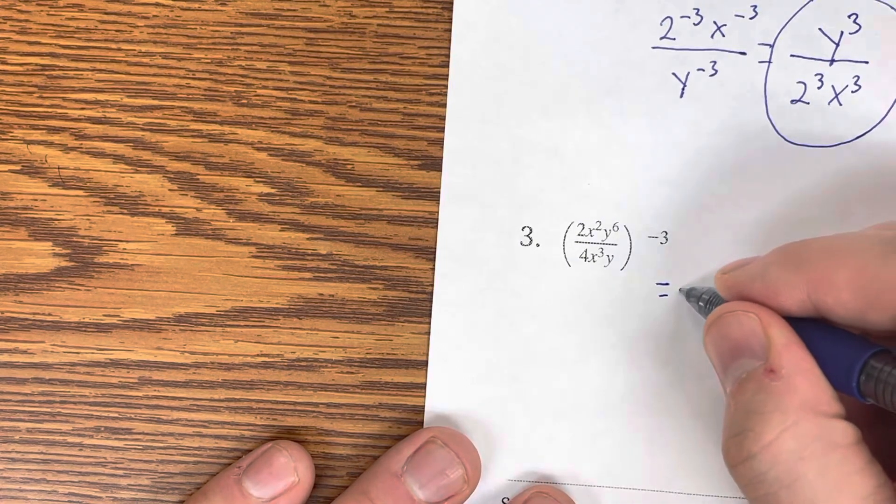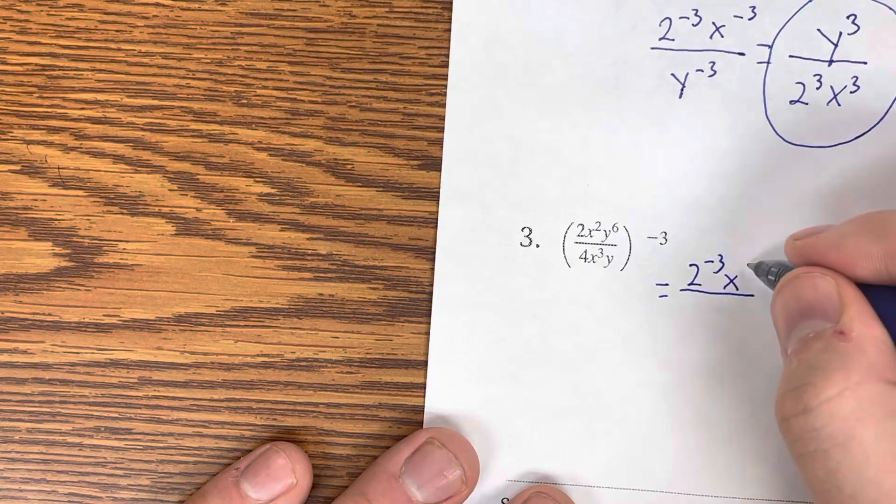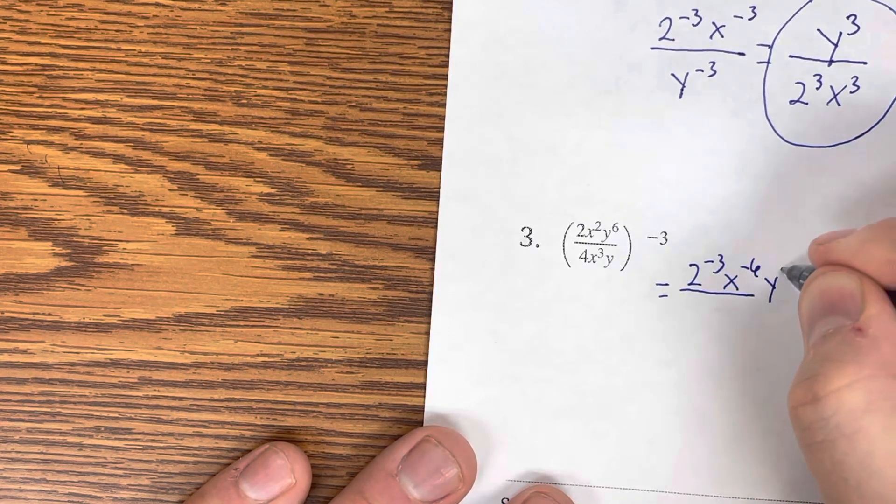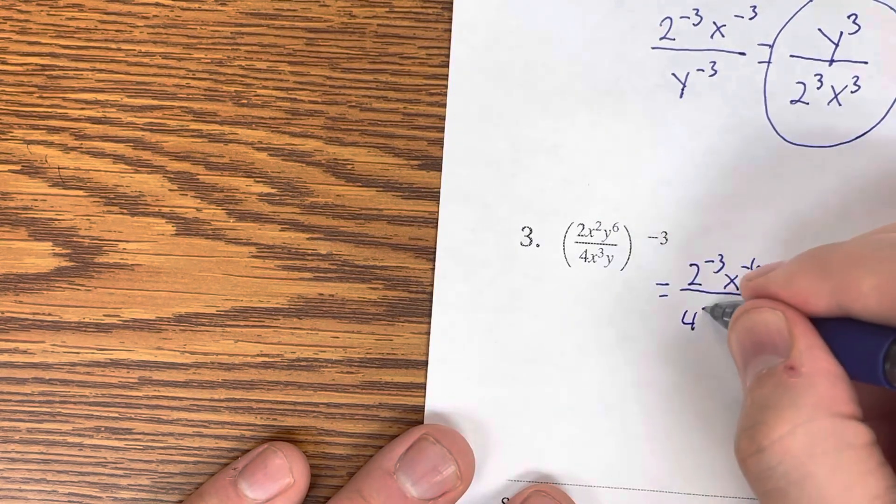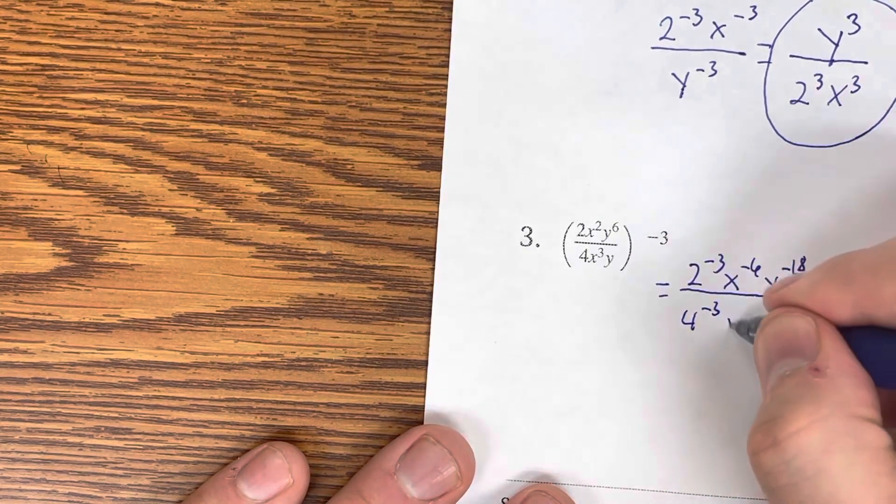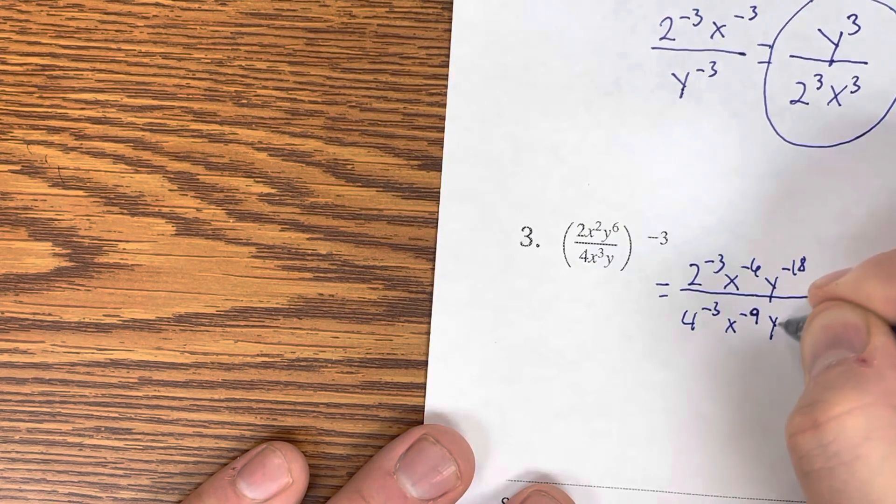So, we have 2 negative 3rd, x to the negative 6th, y to the negative 18th. On the bottom, 4 to the negative 3rd, x to the negative 9th, and y to the negative 3rd.